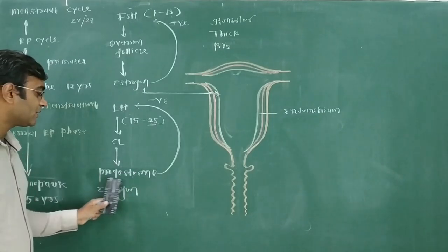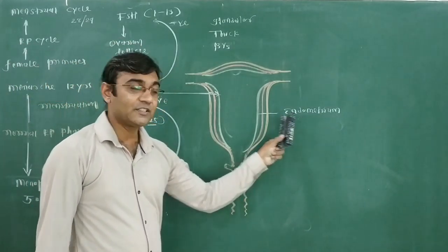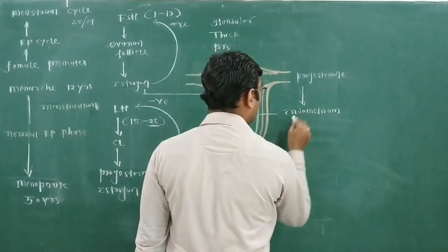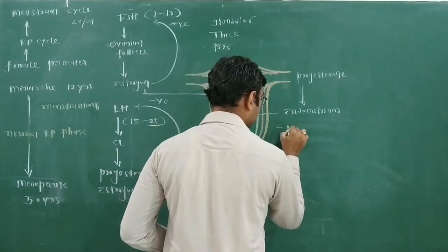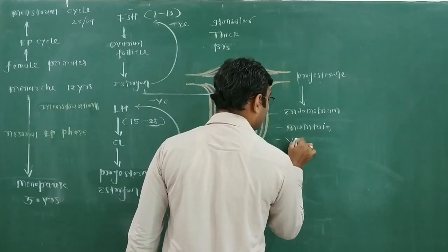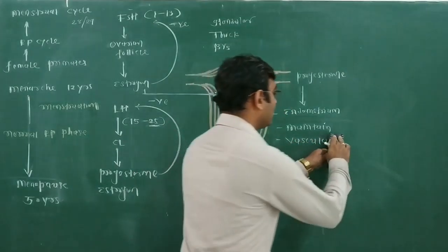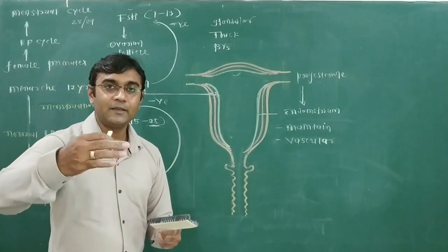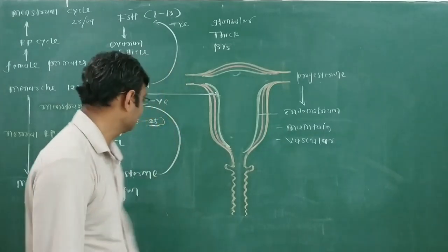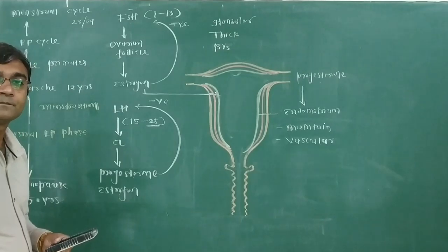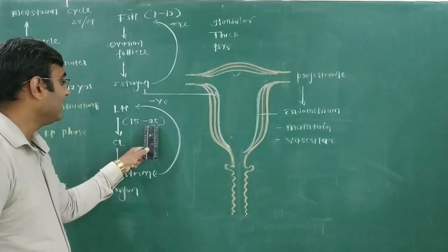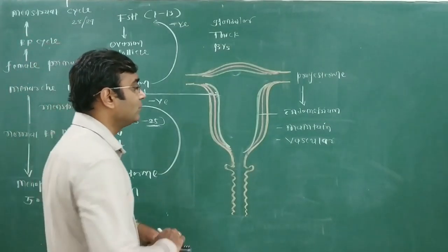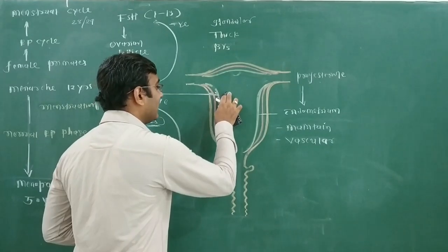From days 15 to 28, progesterone maintains the endometrium that was built by estrogen. Under the effect of progesterone, the endometrium is maintained as it is and becomes more muscular — rich with blood vessels. But towards the end of the ovarian and menstruation cycle at day 28, the corpus luteum has already degenerated, so both progesterone and estrogen concentrations decrease, and the endometrium is no longer supported by hormones.